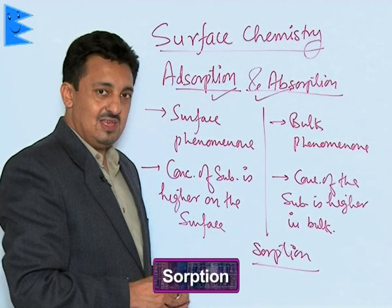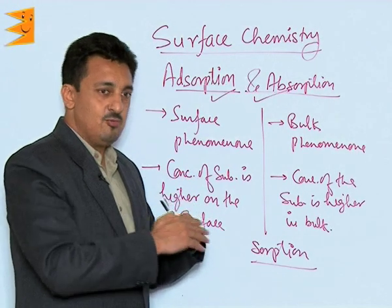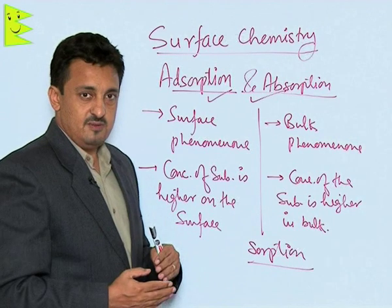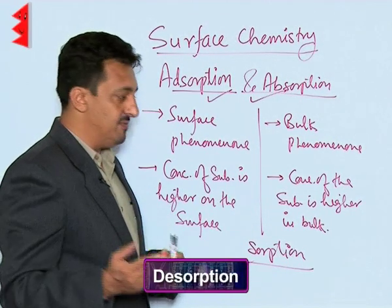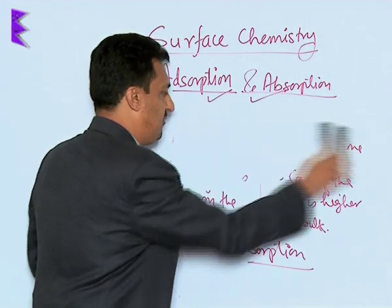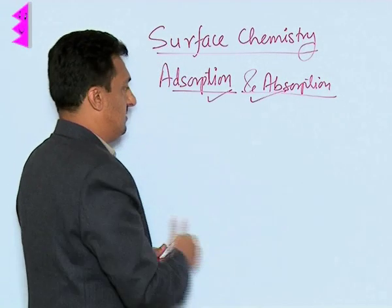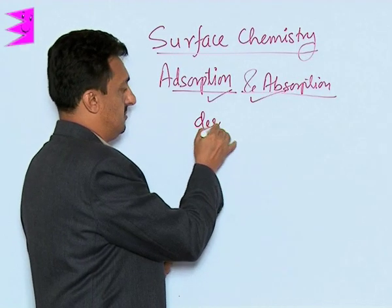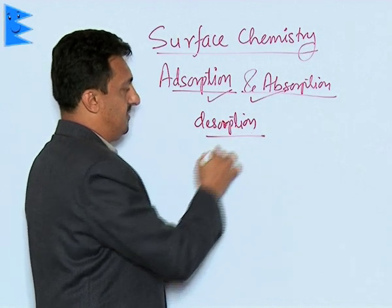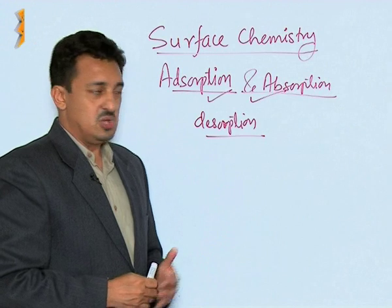Whenever already adsorbed substances are removed from the surface, it is called desorption. Desorption is the removal of substances which are already adsorbed on the surface — it is essentially the opposite of adsorption.